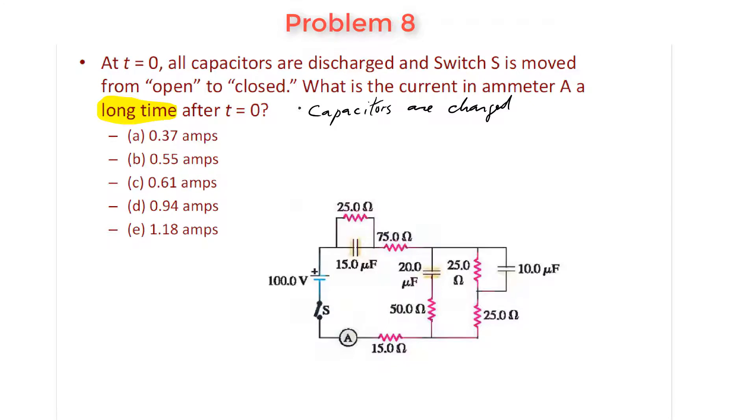So any of these, we don't have to worry about anymore, because all of those, the current flowing through them have to be equal to zero. That means if no current can flow through those, the current can only flow up here.